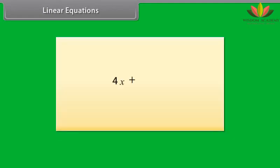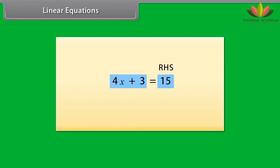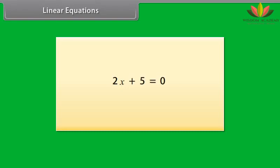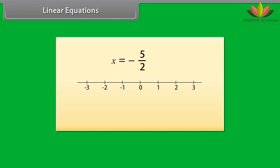A simple linear equation is an equality between two algebraic expressions involving an unknown value called the variable. The two sides of an equation are called the right-hand side (RHS) and left-hand side (LHS). Consider this equation — the solution or root of this equation is minus 5 by 2. Let's see where it represents on the number line. Here it is.